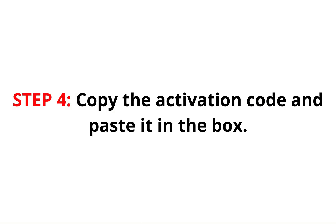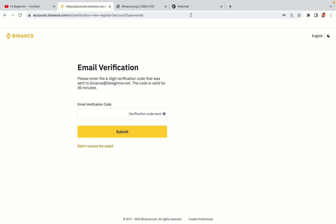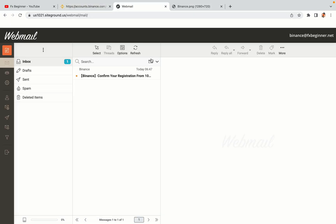Step 4: A confirmation code will be sent to your mail. Open your mail inbox, copy the code and paste it in the box to fully activate your Binance trading account.